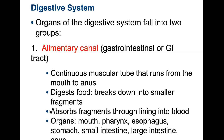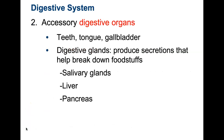The alimentary canal is basically the tube within us. If you pulled it out, you could line it up and it would be about eight meters — quite a lot of tubing. Of course, we're going to have some digestive accessory organs: the teeth, the tongue, the gallbladder, some of the salivary glands, the liver, and the pancreas. All of these things aid in the process of digestion.